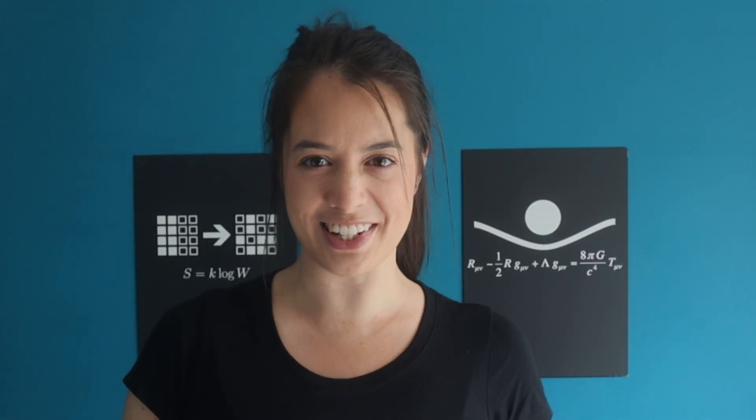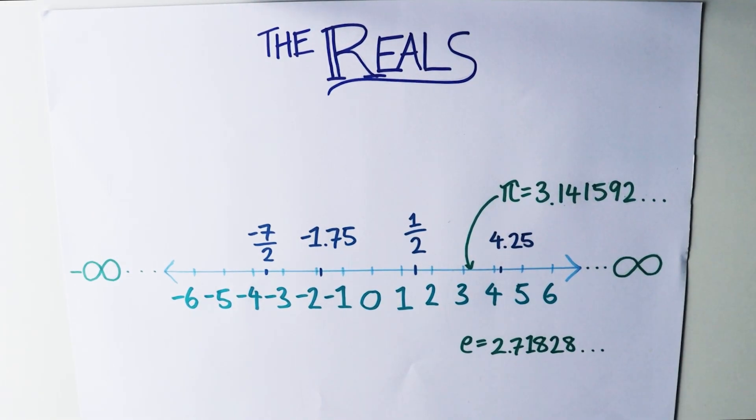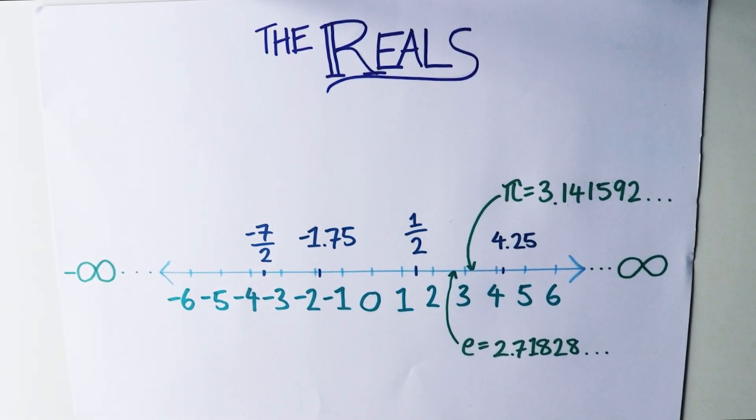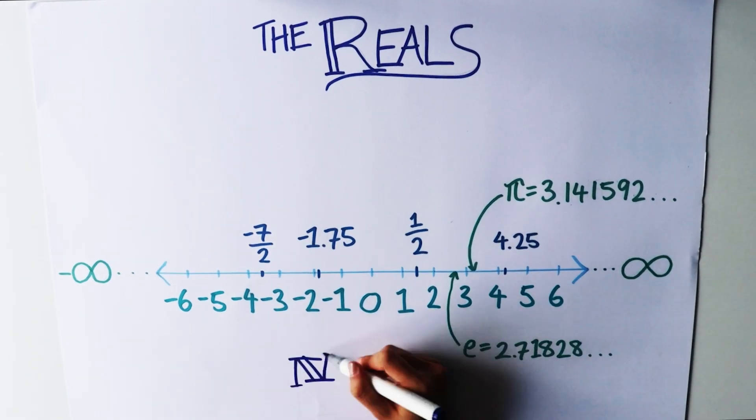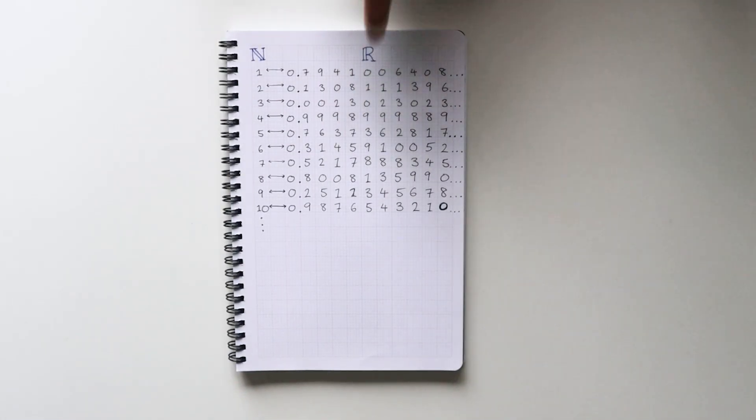So are there infinities bigger than aleph null? Take the set of real numbers — these include all whole numbers, rational numbers, and irrational numbers, making up all numbers on the continuous number line. Are the infinity of the natural numbers and the infinity of the real numbers the same size? We can answer this by seeing if we can create a one-to-one mapping. We'll limit the reals to just those between zero and one. Suppose someone knocks on your door claiming they've already made a one-to-one mapping between every real number and a natural number — can you prove them wrong?